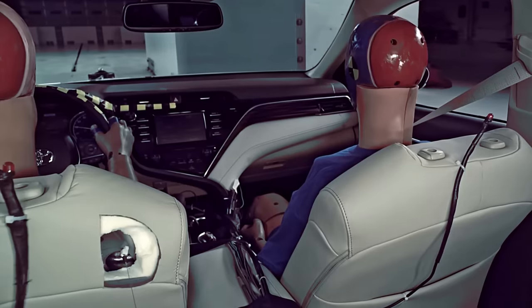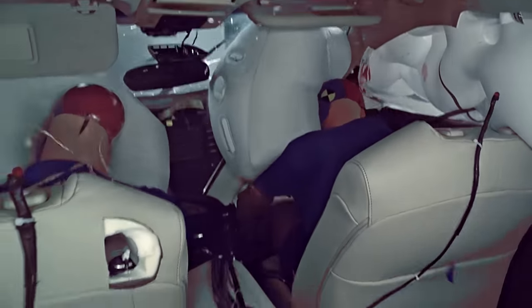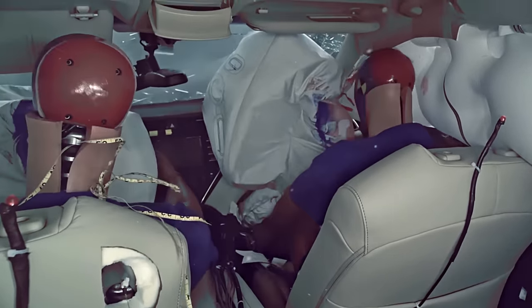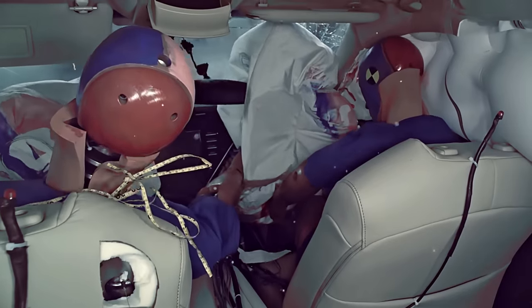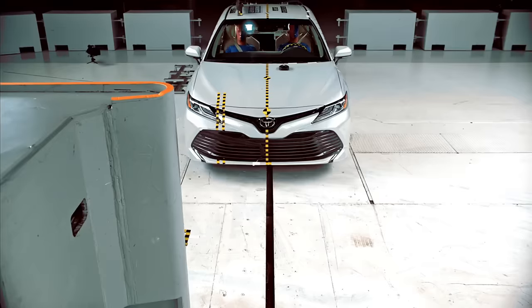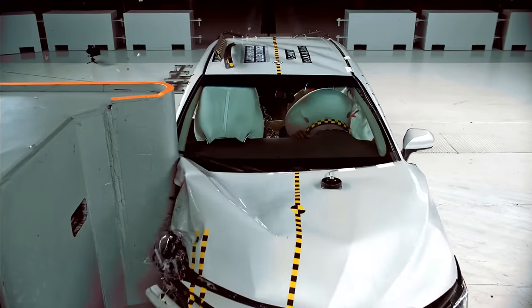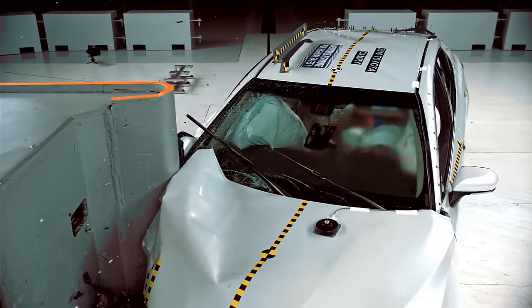When an airbag deploys, the electronics of the airbag system take just 15 milliseconds to decide if the forces on the vehicle are severe enough. Within 60 milliseconds from the instant of impact, the airbag is fully deployed. The entire process, from initial vehicle contact to deployment, happens at twice the speed of a blink of an eye.